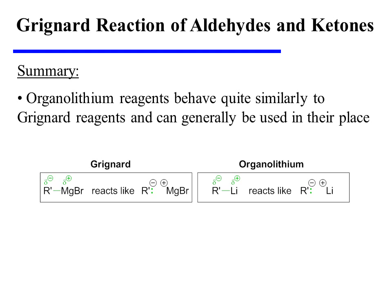It is also worth noting that organolithium reagents behave quite similarly to Grignard reagents and can generally be used in their place. The same polarization present in the carbon-magnesium bond is present in an organolithium species, making the carbon behave effectively as a carbanion. This is why organolithium reagents are more or less interchangeable with Grignard reagents at a simplistic level.